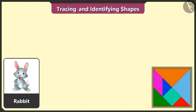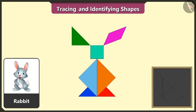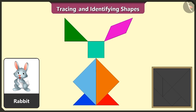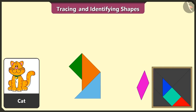This is a rabbit. Now we will try to create a rabbit using four triangles, one square, and one more triangle, and one quadrilateral. See, the rabbit is ready! This is a cat, so let's make a cat using three triangles, one quadrilateral, one square, and the remaining two triangles.